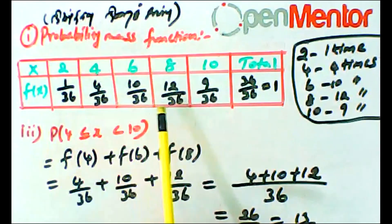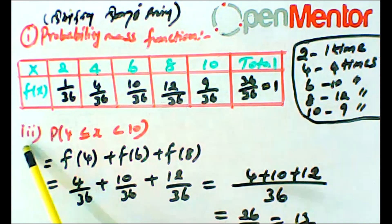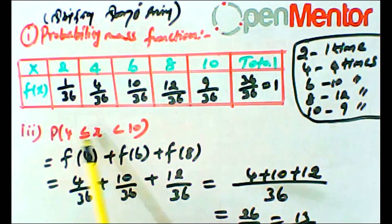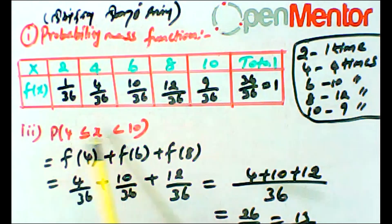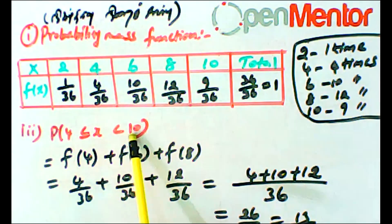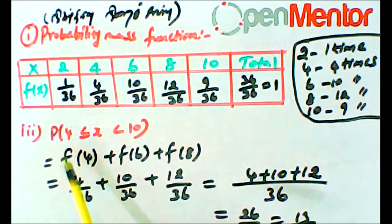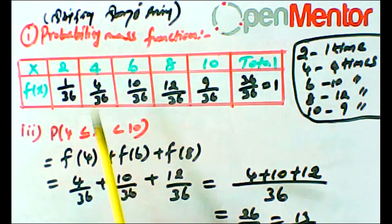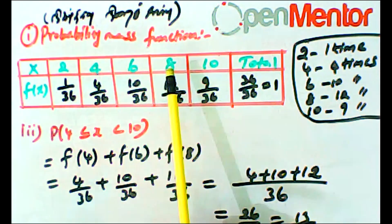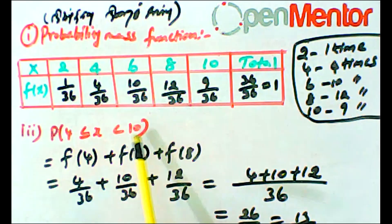This completes the probability mass function. Now for the third part: P of 4 less than or equal to x less than 10. This includes x values 4, 6, and 8, so we compute f(4) plus f(6) plus f(8).